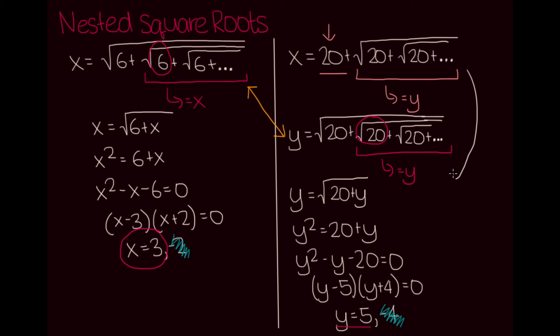If we return to our topmost equation, we get x is equal to 20 plus y. We know y is 5, so this becomes x is equal to 20 plus 5, and thus x is equal to 25 is our solution.